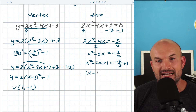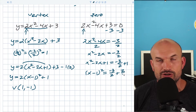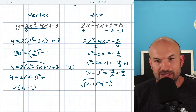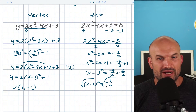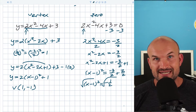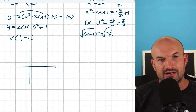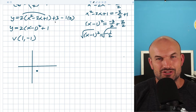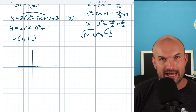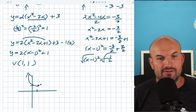Factoring down gives x minus one quantity squared equals negative three halves plus two over two, which is negative one half. Now, if we wanted to solve from here, we'd take the square root of both sides — but we can't take the square root of negative one half. We could find imaginary solutions, but hopefully you recognize these are going to have no real solutions, meaning this graph does not cross the x-axis. That makes sense because from the first method we found the vertex is at one comma positive one, and with a positive leading coefficient the parabola opens upward — so it never crosses the x-axis.